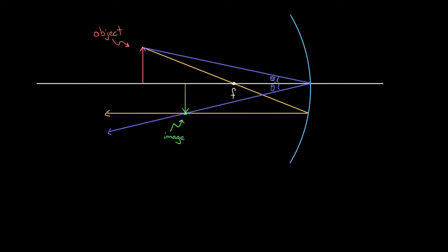We're going to make two triangles that each have theta as one of their angles. The first one goes from the base of the image to the center of the mirror, then from the mirror to the tip of the image, and then back down to the base of the image — this pink triangle. It's a right triangle because that angle is a right angle, and it has theta as one of its angles. I can draw another triangle with theta: from the tip of the object to the center of the mirror, then from the center of the mirror to the base of the object, and back up — this blue triangle. That's also a right triangle.